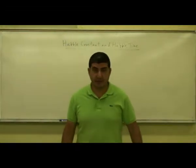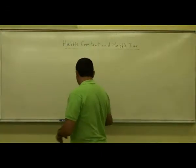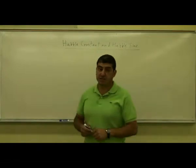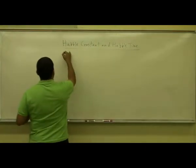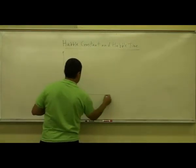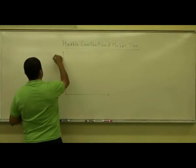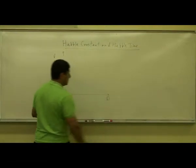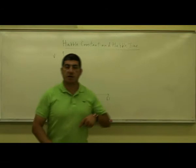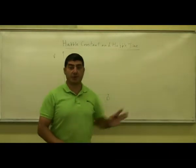The Hubble constant and the Hubble time. The Hubble constant is a very important constant in astronomy. We plot a graph of velocity versus distance, so the Hubble constant is the slope of this graph.